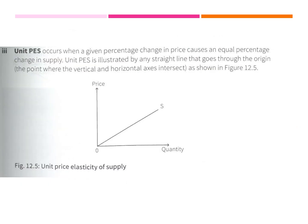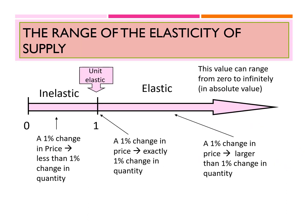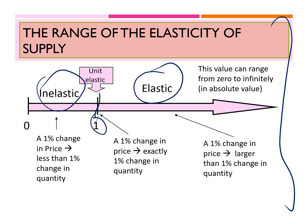Our final extreme case — unitary elasticity — is not one of the two main ones, but you need to know that when I calculate the PES or PED of a unitary elastic curve, I will always get an answer equal to one. That means the percentage change in quantity is equal to the percentage change of price, so when dividing them by each other, I get an answer equal to one. In summary: if it's inelastic, elastic, or unit elastic, your answer would be one for the unit case.